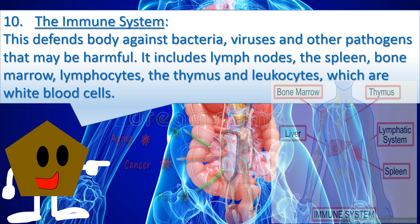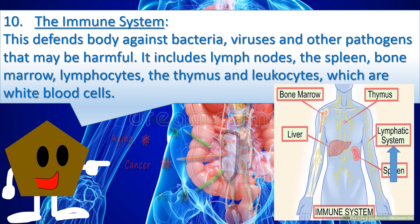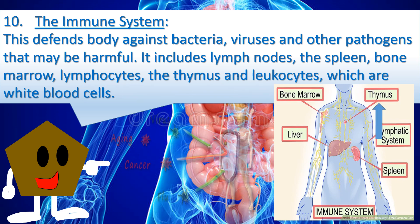10. The immune system defends the body against bacteria, viruses, and other pathogens that may be harmful. It includes lymph nodes, the spleen, bone marrow, lymphocytes, the thymus, and leucocytes, which are white blood cells.